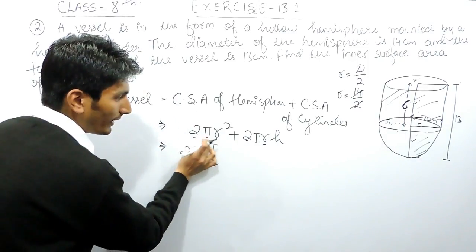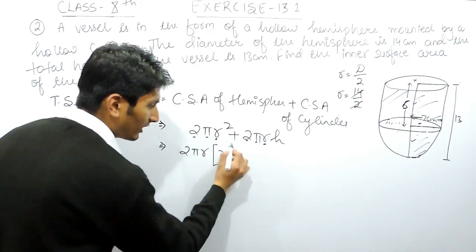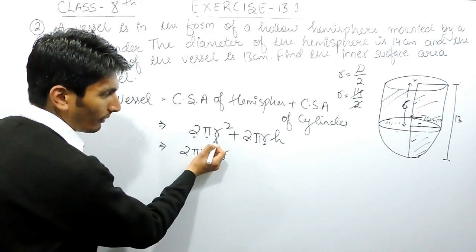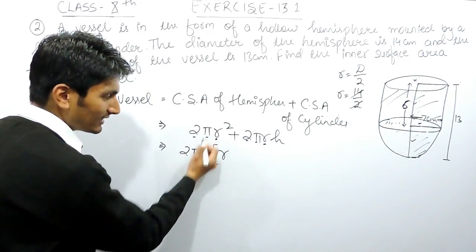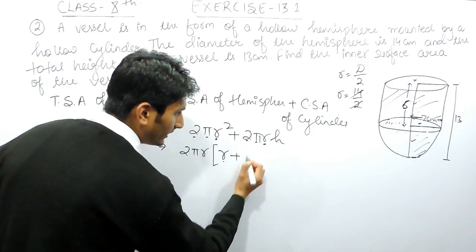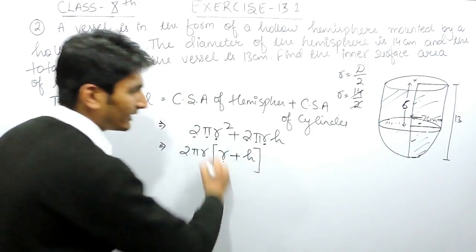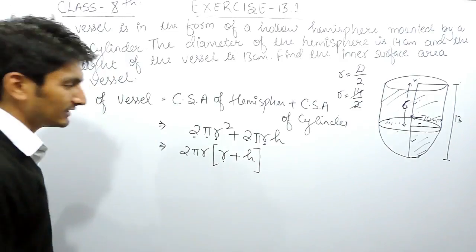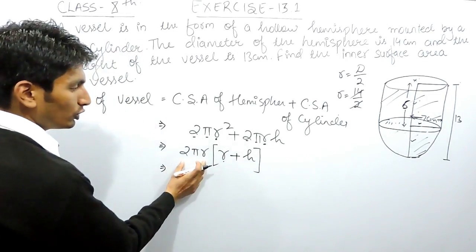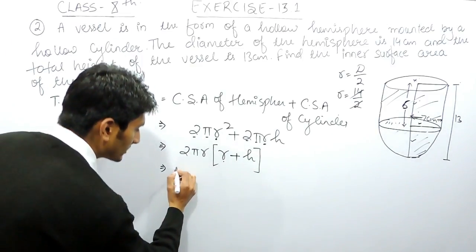Taking 2πr as common: from 2πr², one r remains inside the bracket; from 2πrh, only h remains. So the expression becomes 2πr(r + h). Now 2πr only needs to be solved once, and we can substitute the values.